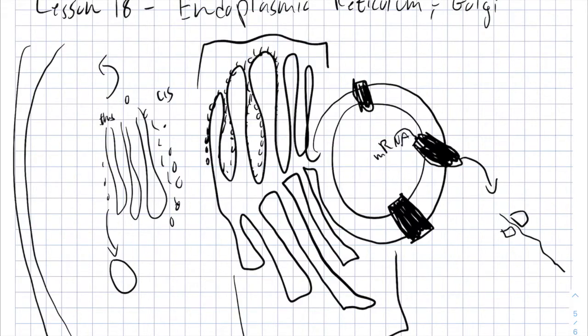Well, the rough endoplasmic reticulum, first of all, is called rough because it's stratified with ribosomes. It is the site of protein synthesis. What differentiates the ribosomes of the cytosol from the ribosomes of the endoplasmic reticulum?